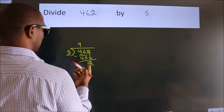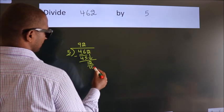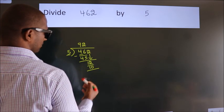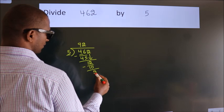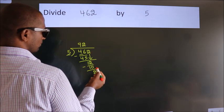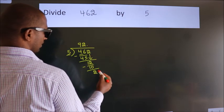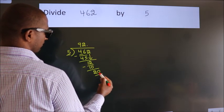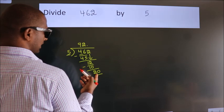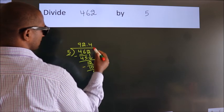A number close to 12 in the 5 table is 5 twos, 10. Now we subtract. We get 2. After this, no more numbers to bring down, so what we do is put a dot, take zero, so 20. When do we get 20 in the 5 table? 5 fours, 20.